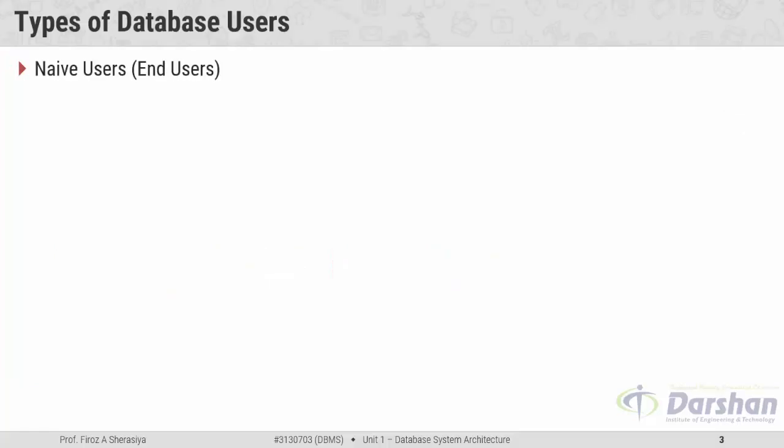The first type is naive user, also known as end user. In this category, the person who is an unsophisticated user who has zero knowledge about the database system but can simply operate a computer comes under this category. These are the users who use existing applications to interact with the database system.